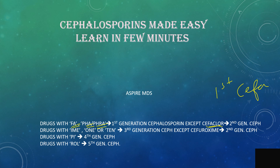Third generation Cephalosporins have endings with IME, 1, or 10. One exception is Cefuroxime, which is a second generation Cephalosporin. Drugs containing PI in their name fall into the fourth generation Cephalosporins, and drugs containing ROL belong to the fifth generation Cephalosporins.